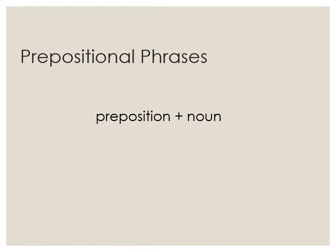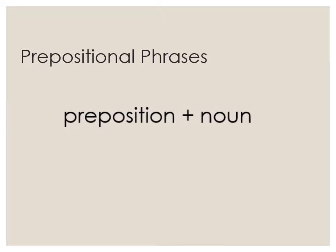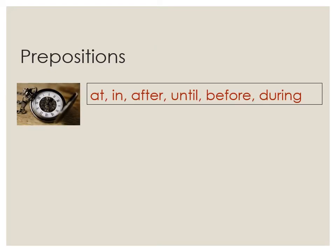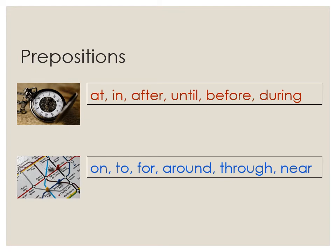Let's start with prepositional phrases. A prepositional phrase is a combination of a preposition and a noun. In general, prepositions are words that show time and space relationships. Prepositions about time include words like at, in, after, until, before, and during, while prepositions about space relationships include words like on, to, for, around, through, and near.